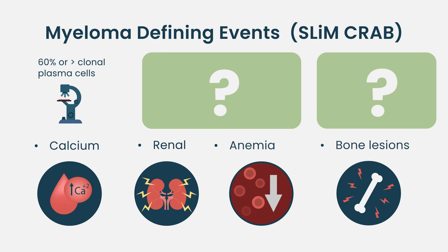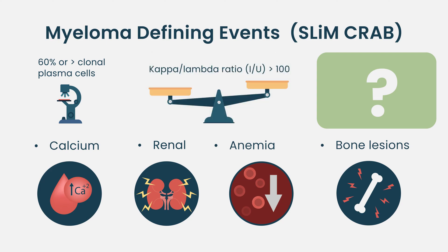The second additional myeloma-defining event is the free light chain ratio. We measure serum-free kappa and free lambda light chains. If the patient has kappa light chain type myeloma, the ratio of kappa to lambda should be more than 100, with the kappa light chain level itself greater than 100 milligram per liter. That would be the second myeloma-defining event, in addition to the four CRAB criteria.